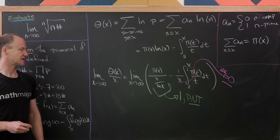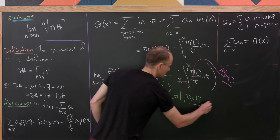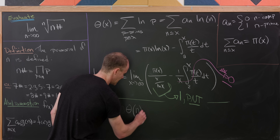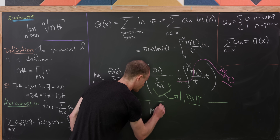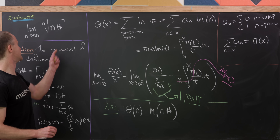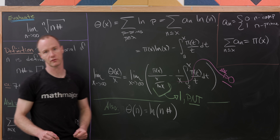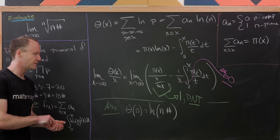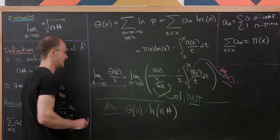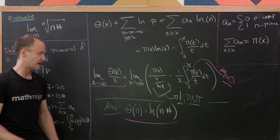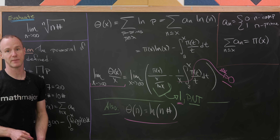So we've got the limit of θ(x)/x equal to 1. Also, we know that θ(n) is in fact equal to the natural log of the primorial of n, in other words log(n#). That follows from the definition of n# along with logarithm rules — how the logarithm splits a product into a sum. So the two big facts we have are: the limit as x goes to infinity of θ(x)/x equals 1, and θ(n) equals log(n#).